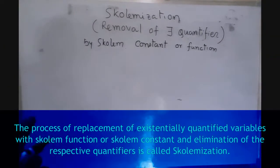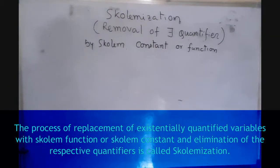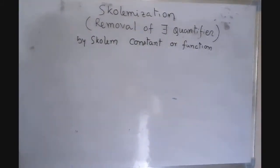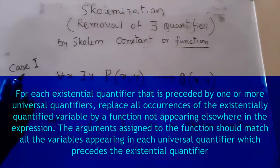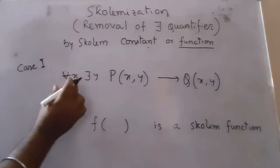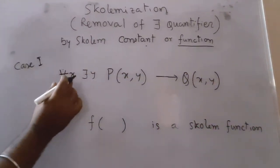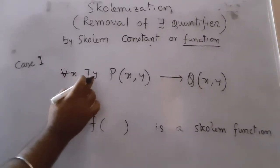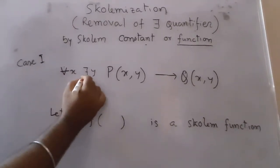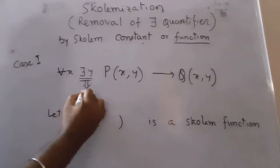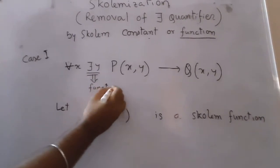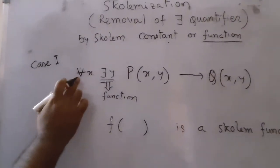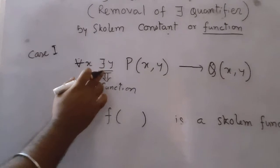Skolemization means removal of existential quantifier by using Skolem constant or Skolem function. Consider Case 1: in this example, there is a universal quantifier just preceding the existential quantifier. In that case, we will replace the existential quantifier by a function. Why are we using a function? Because a universal quantifier is there just preceding the existential quantifier.